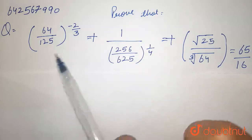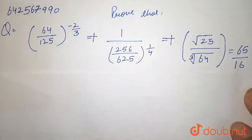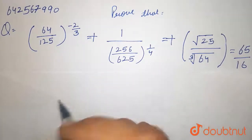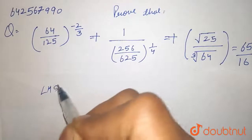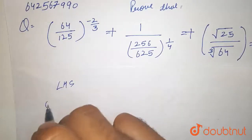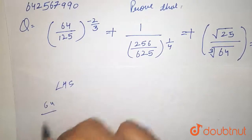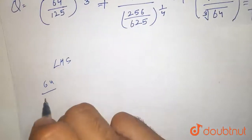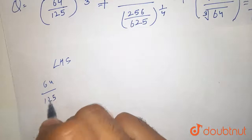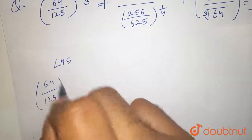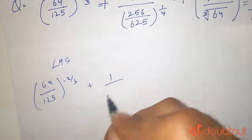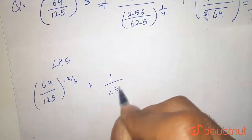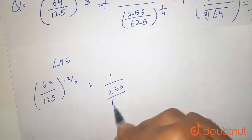So here I take the left hand side, which is equal to 64 upon 125, plus 1 by 256 upon 16.